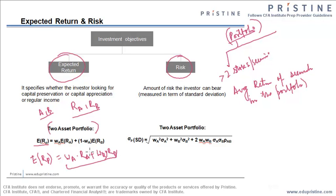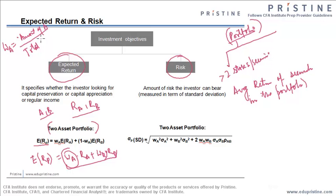The expected return on the portfolio would be the weight of A times R_A plus the weight of B times R_B. This is the expected weighted average return. Weight A is the dollar amount of asset A in the portfolio divided by the total dollar value of the portfolio.